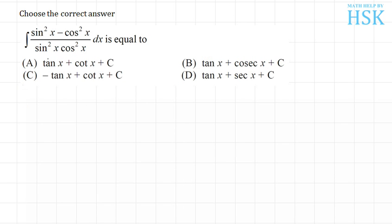First of all, I take this function: (sin²x - cos²x)/(sin²x·cos²x). This can be written as sin²x/(sin²x·cos²x) minus cos²x/(sin²x·cos²x).